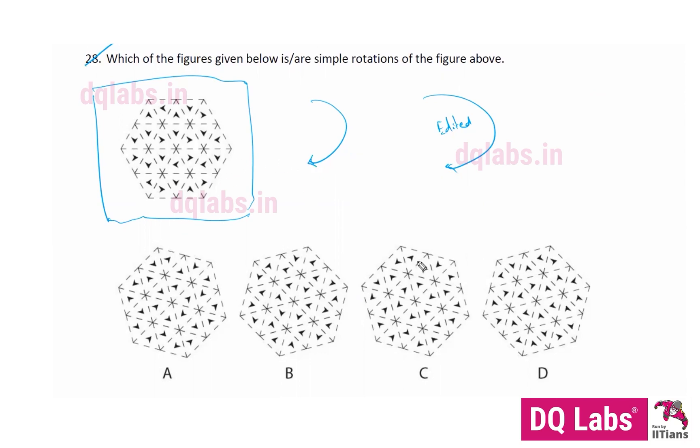Since we do not know in the options how much they have been rotated, it could be 90 degrees or any angle. So for that we should find a reference point in the figure that would help us determine how much they have been rotated, and the reference also helps us finding the differences.